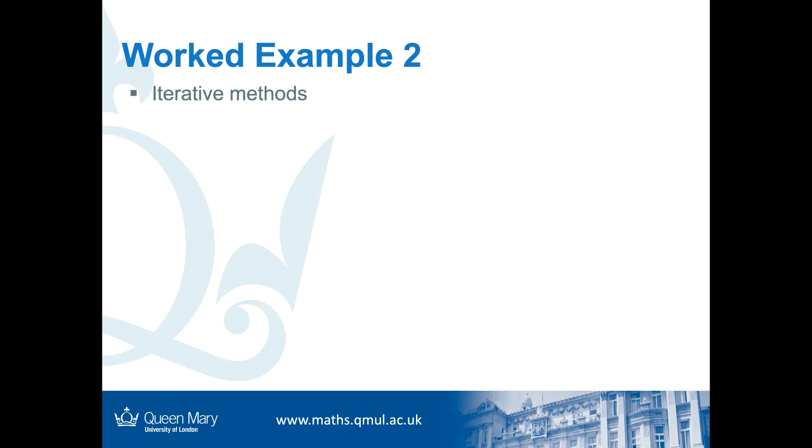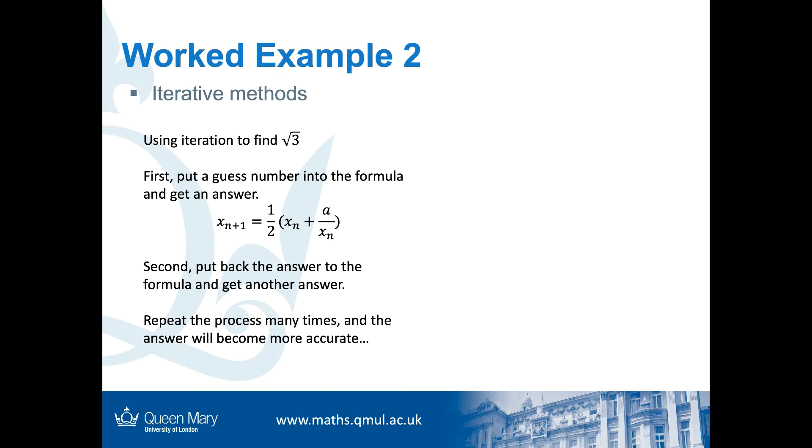Let's see another example about iterative methods. So, let's use iteration to find the square root of 3. First, we need to guess a number into this formula and get an answer. The formula is x_{n+1} = ½(x_n + a/x_n).